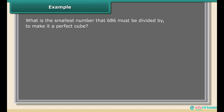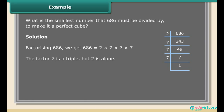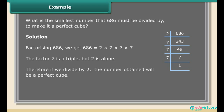Example: What is the smallest number that 686 must be divided by to make it a perfect cube? Solution: Factorizing 686, we get 686 = 2 × 7 × 7 × 7. The factor 7 is a triple, but 2 is alone. Therefore, if we divide by 2, the number obtained will be a perfect cube. 686 must be divided by 2 to make it a perfect cube.